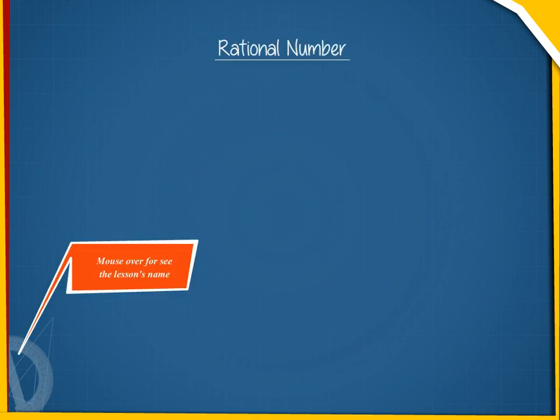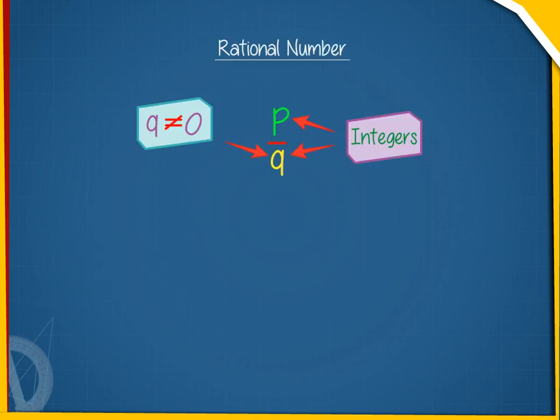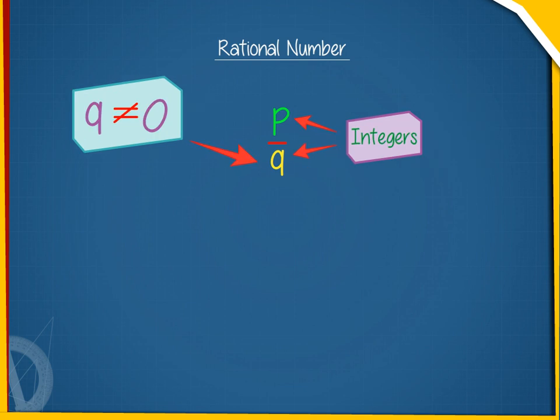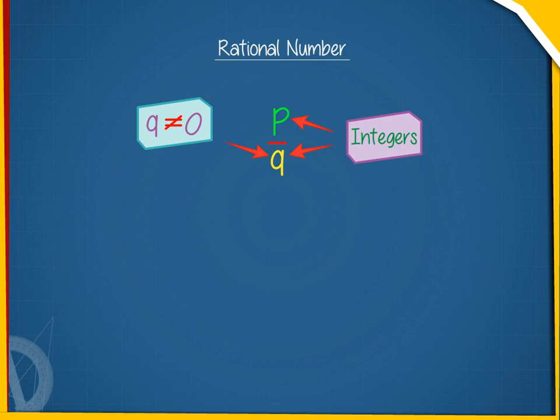Rational number. A number which is of the form or can be expressed in the form P upon Q, where P and Q are integers and Q not equal to 0, is called a rational number. For example,